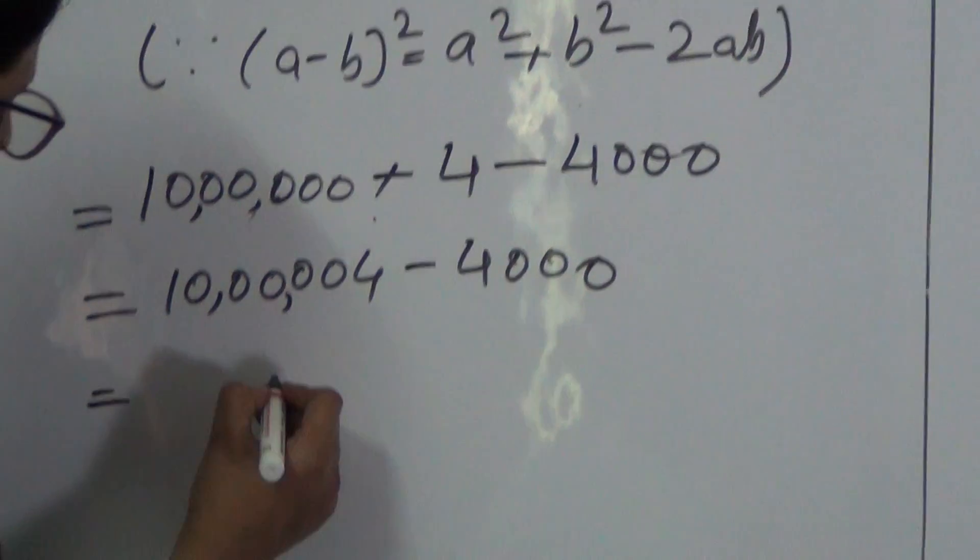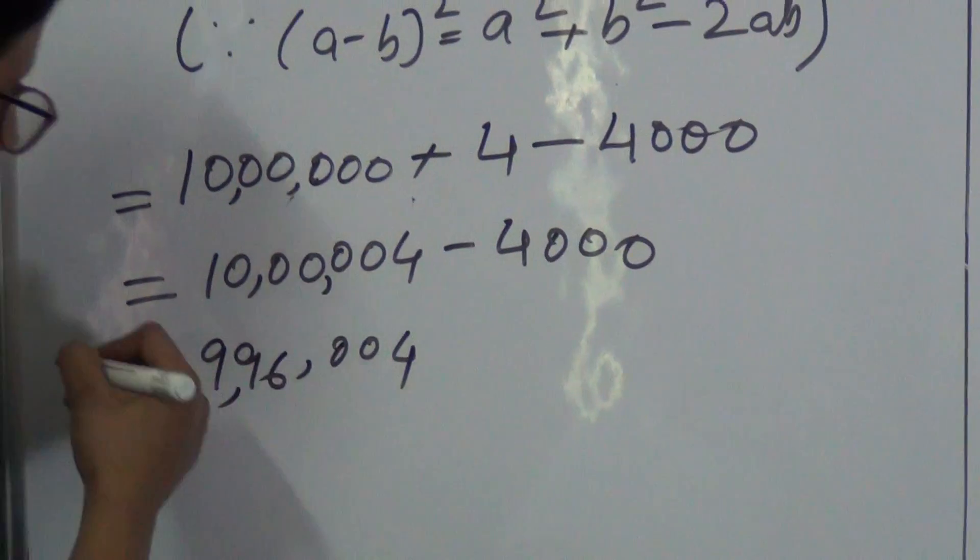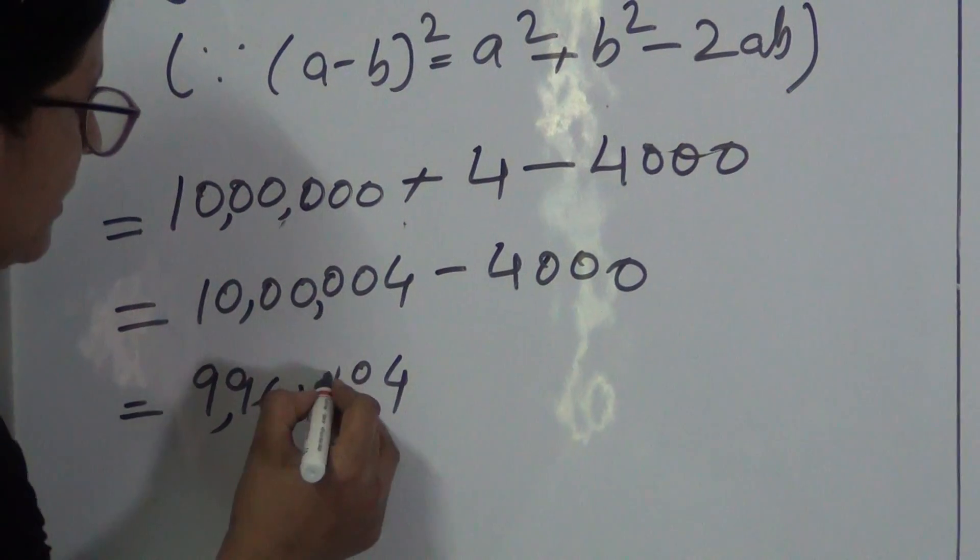Now we need to subtract this 4000 from here, which gives us 9 lakh 96,004.